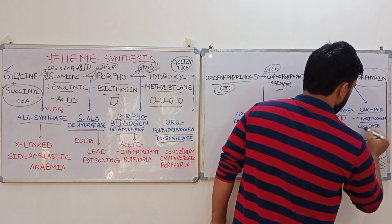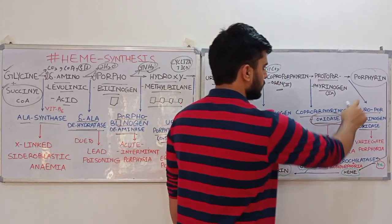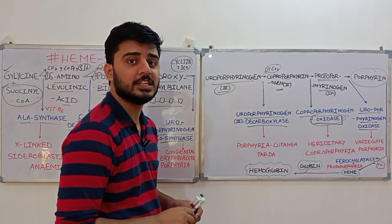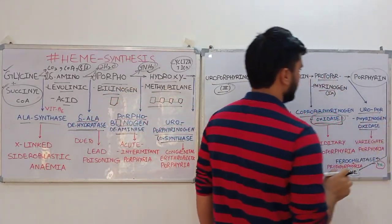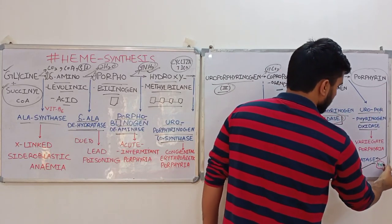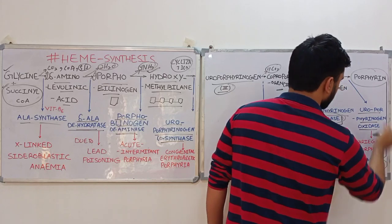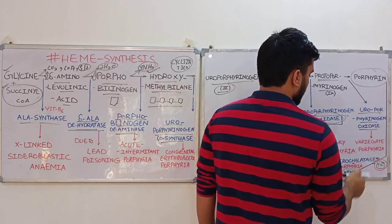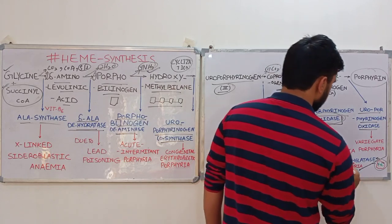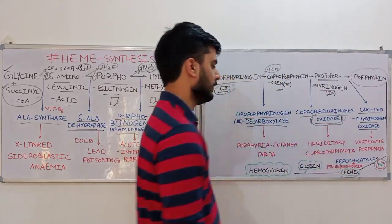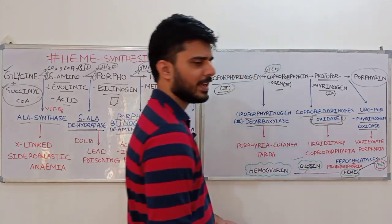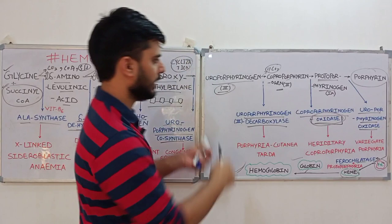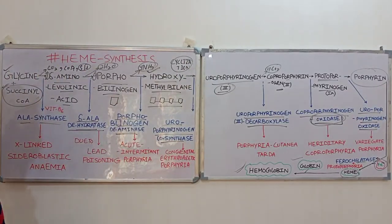Protoporphyrinogen IX is converted into porphyrin by the enzyme uroporphyrinogen oxidase. After porphyrin is formed, heme is produced through chelation. Chelation requires iron in the ferrous form — the iron takes the central position within the heme ring, surrounded by the porphyrin tetrapyrrole. This process occurs in the presence of the enzyme ferrochelatase, producing heme. Heme then combines with the globin molecule (formed like other proteins) to finally produce hemoglobin.